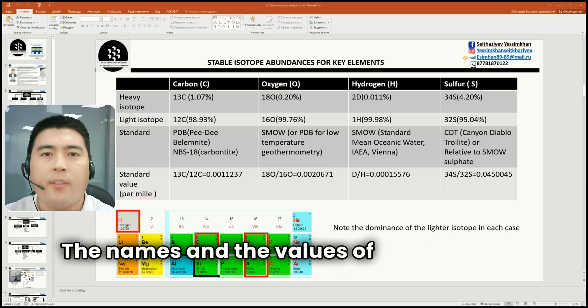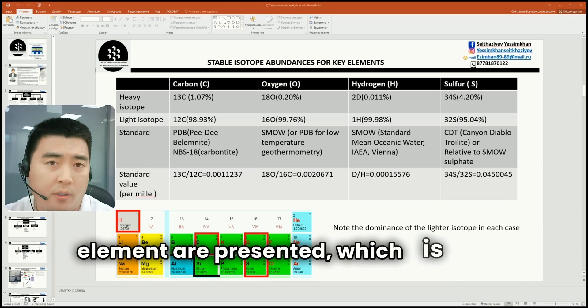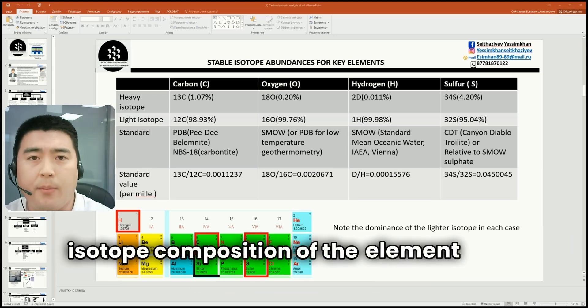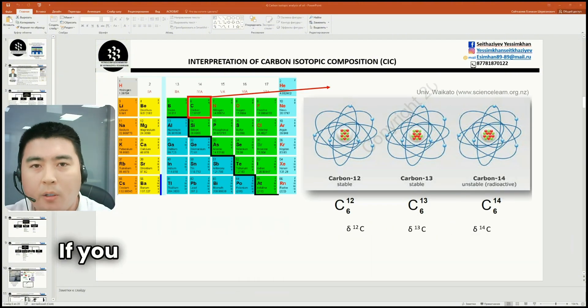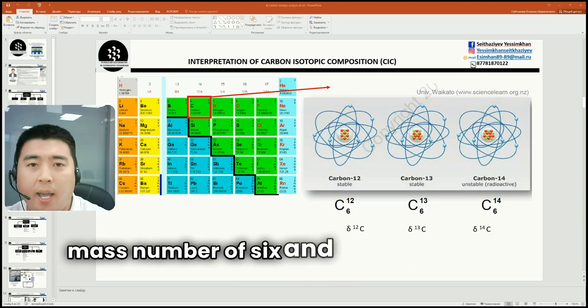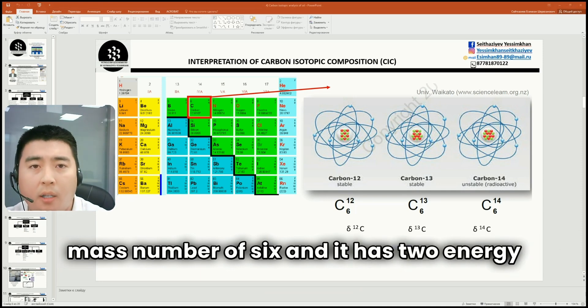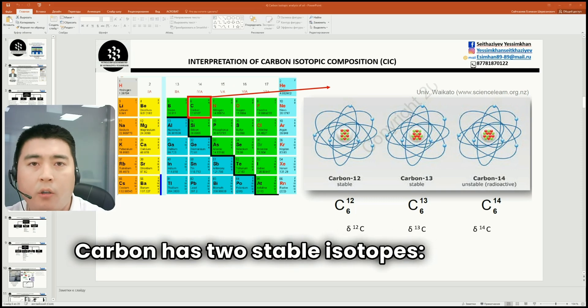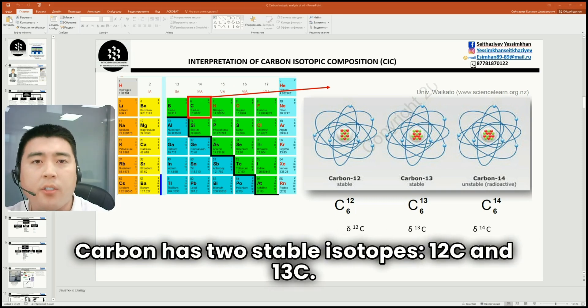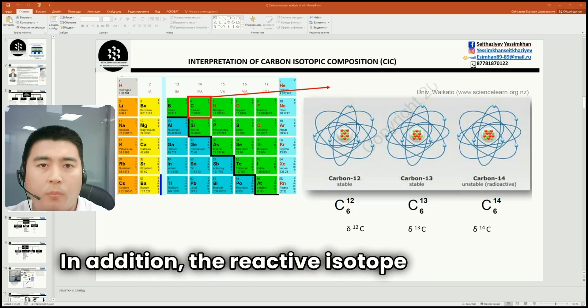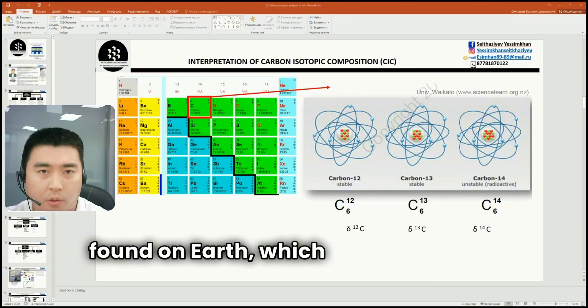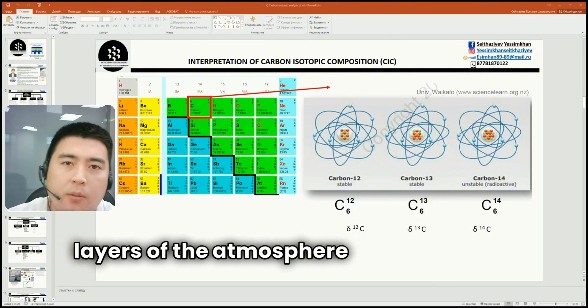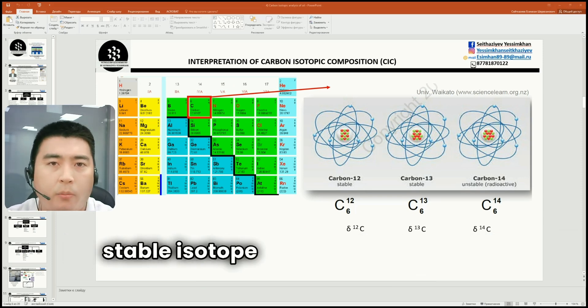The names and values of standards for each element are presented, which are used to calculate the isotope composition of the element of the sample. If you look at the periodic table, carbon has an atomic mass number of six and has two energy levels. The first level has two electrons, the second has four electrons. Carbon has two stable isotopes, 12C and 13C. In addition, the radioactive isotope 14C can be found, which is formed in the upper layers of the atmosphere during nuclear reactions on the stable isotope 14N.